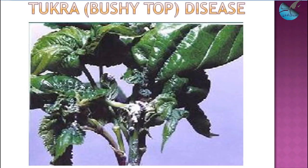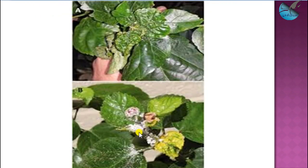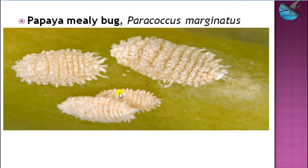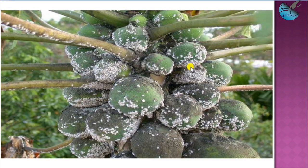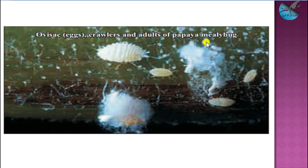This is the symptom we are talking about: the tukra or bunchy top. As they feed on the sap, the plant forms a bunchy appearance called tukra. The second type of mealy bug common in mulberry is the papaya mealy bug, Paracoccus marginatus, usually found on papaya crops. A few years back it caused havoc in papaya cultivation. Cryptolaemus montrouzieri was introduced and successful management was achieved. They lay their eggs in ovisacs covered by mealy secretion, which protects the eggs from spraying.